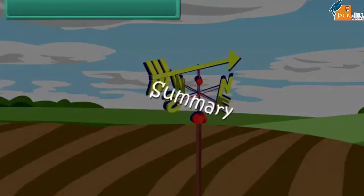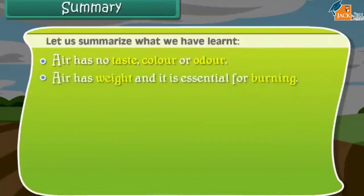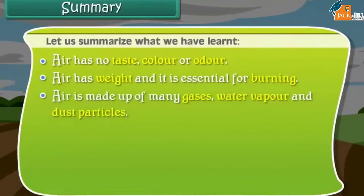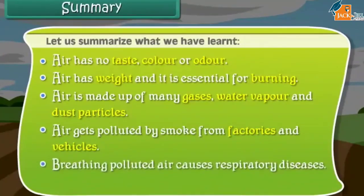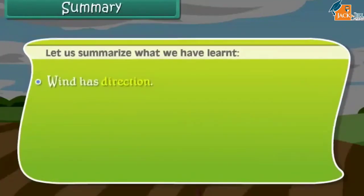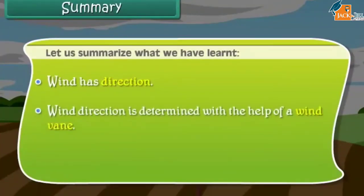Summary: Air has no taste, colour, or odour. Air has weight and it is essential for burning. Air is made up of many gases, water vapour, and dust particles. Air gets polluted by smoke from factories and vehicles, and breathing polluted air causes respiratory diseases. Moving air is known as wind. Wind has direction, which is determined with the help of a wind vane.